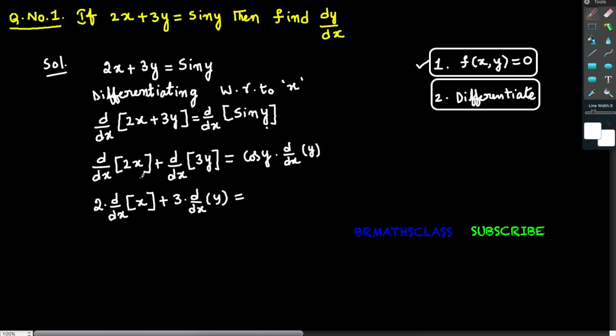dy dx of 2x can be written as 2 into derivative of x plus derivative of 3y can be written as 3 into derivative of y. That equal to cos y into dy dx of y. dy dx of y is nothing but dy by dx. Further if we differentiate this, 2 into derivative of x with respect to x is 1 plus 3 into dy by dx equal to cos y into dy by dx.